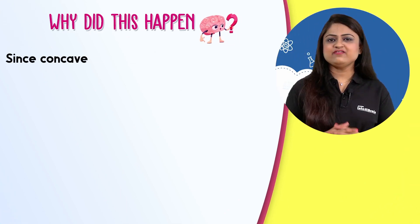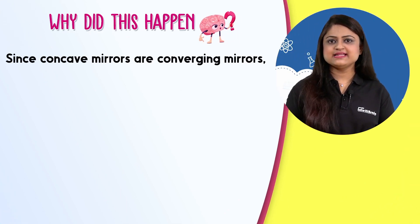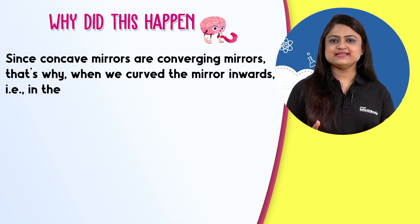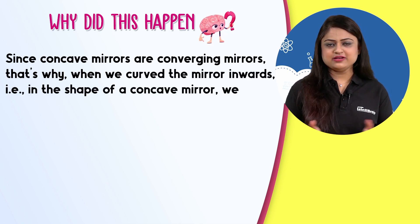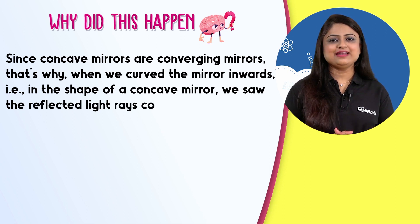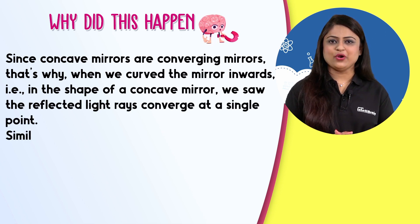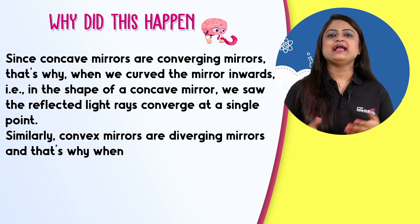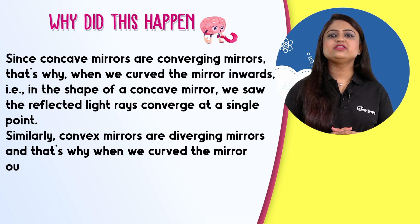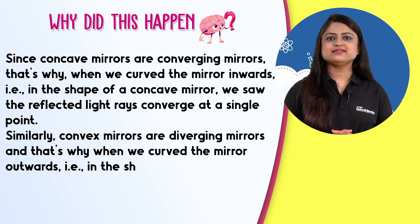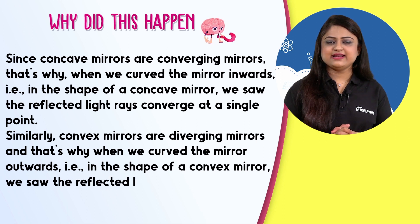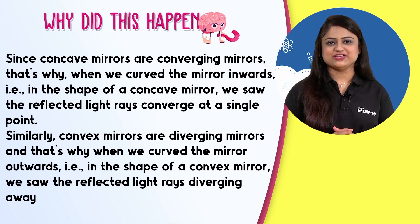Since concave mirrors are converging mirrors, that's why when we curved the mirror inwards, in the shape of a concave mirror, we saw the reflected light rays converge at a single point. Similarly, convex mirrors are diverging mirrors and that's why when we curved the mirror outwards, in the shape of a convex mirror, we saw the reflected light rays diverging away from each other.